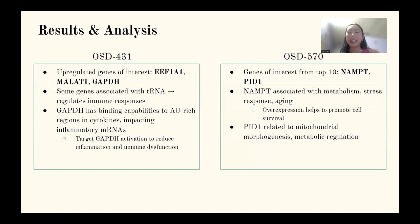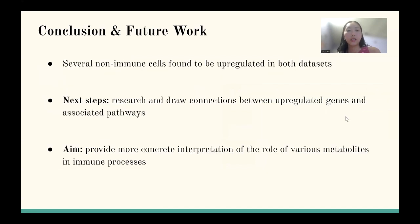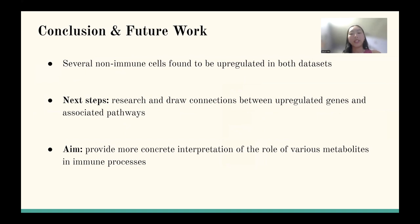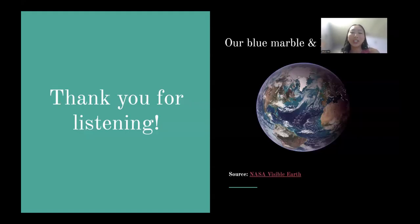From the second data set, I noticed similar patterns of non-immune-specific genes being associated with metabolism and regulation. To sum up, the biggest finding was that several non-immune-specific genes were upregulated in both data sets, and these genes have shown connections to the immune system as well as metabolism. The next steps would include doing further research into the pathways these upregulated genes are associated with, with the ultimate goal of providing a more concrete understanding of the role of metabolites in these immune processes. Thank you so much for listening to my presentation.